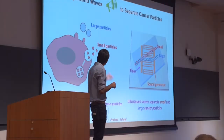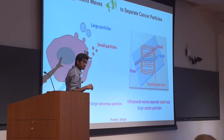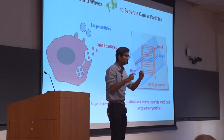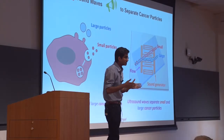Because this understanding is relatively new, the current cancer therapies do not target these cancer vesicles. This is an image of a cancer cell releasing these cancer particles. These particles have two main populations: one is small size cancer particles and the other is large size cancer particles.